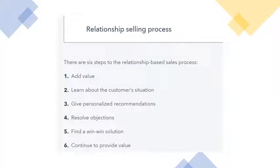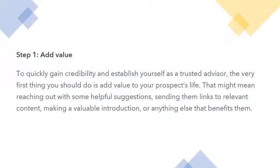The relationship-based sales process has six steps: first, add value; second, learn about the customer's situation; third, give personalized recommendations; fourth, resolve objections; fifth, find a win-win solution; and sixth, continue to provide value. The first step — adding value — is about the salesperson quickly gaining credibility and establishing themselves as a trusted advisor. The very first thing you should do is add value to your prospect's life.